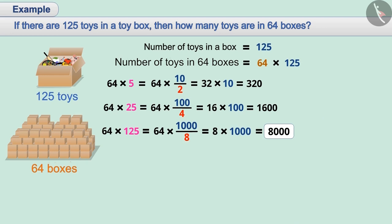Therefore, if there are 125 toys in a box, then there will be 8000 toys in 64 boxes.